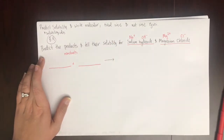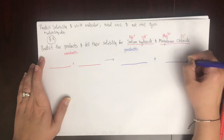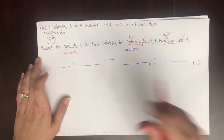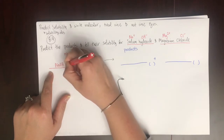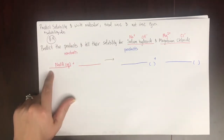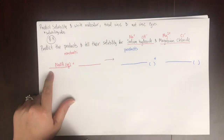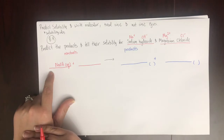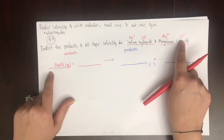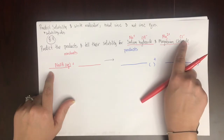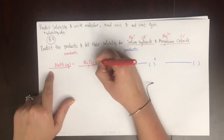These are the reactants, and we're going to predict the products and their solubility. Sodium hydroxide, NaOH, is aqueous — the solubility rules chart in table 8.4 tells us that. There's no way to look at sodium hydroxide and know if it's aqueous or solid without that chart. Then magnesium chloride: ionic compounds are charge neutral, so if magnesium is +2, we need two chlorines, giving MgCl₂, also aqueous.